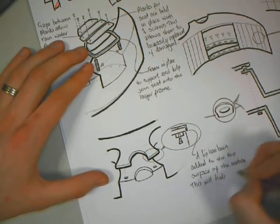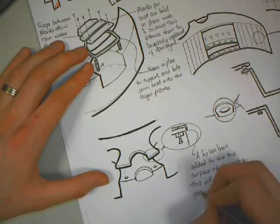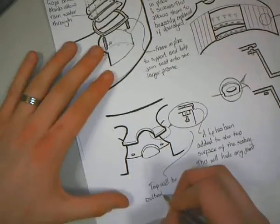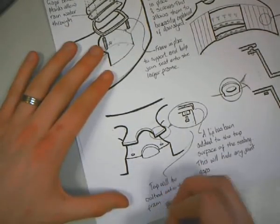Here I have added a lip to hide the join between the top cover and base. This improves the aesthetics of the seating. You must justify each and every decision you make with your design.